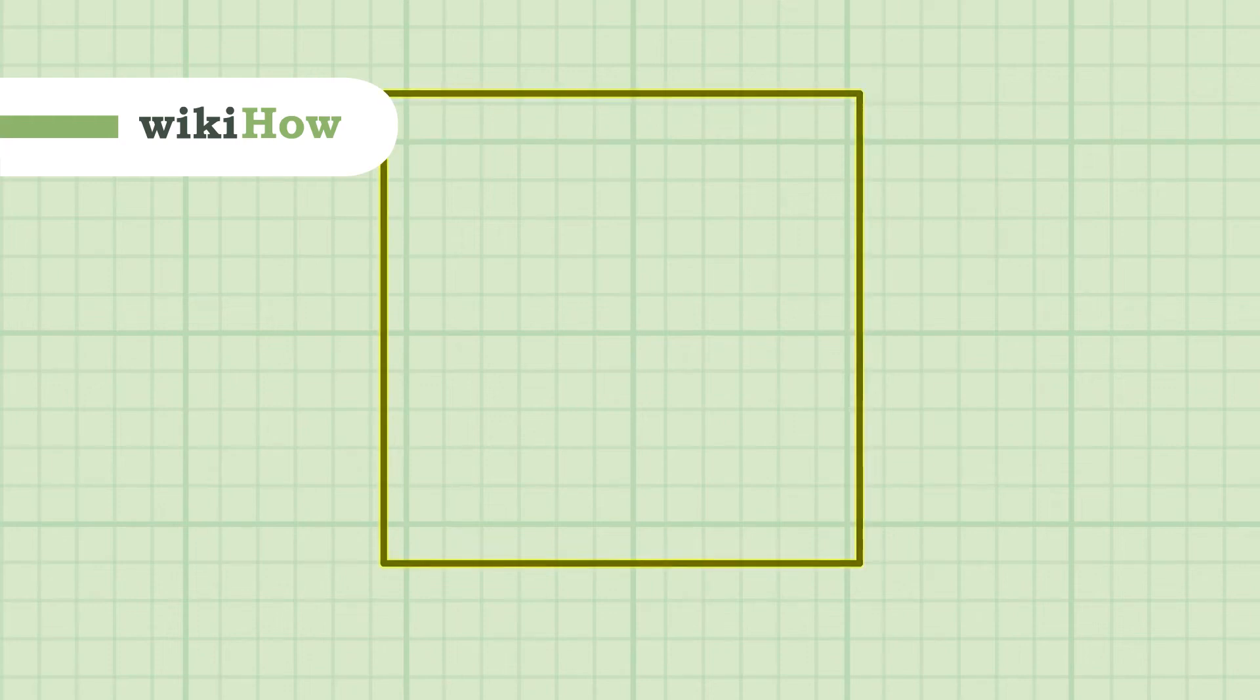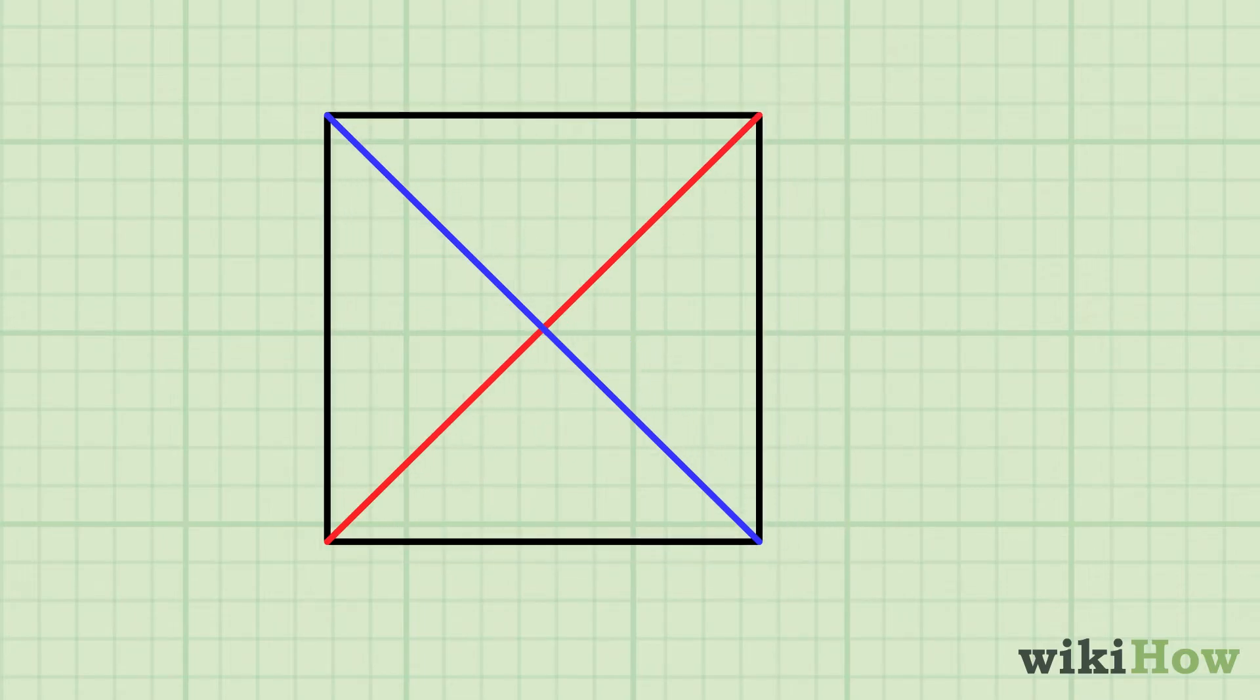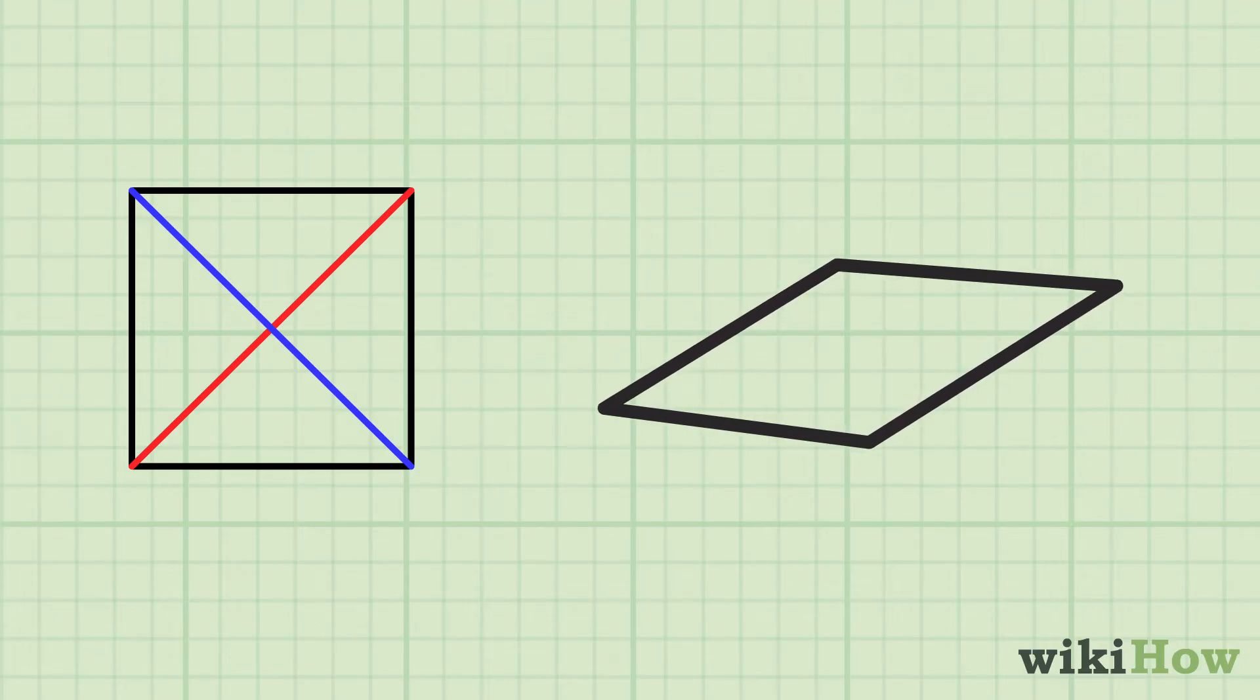A rhombus is a shape with four equal sides, each of which is parallel to the opposite side. While a square is a type of rhombus, they can also be diamond-shaped, with angles of greater or less than 90 degrees at each corner.